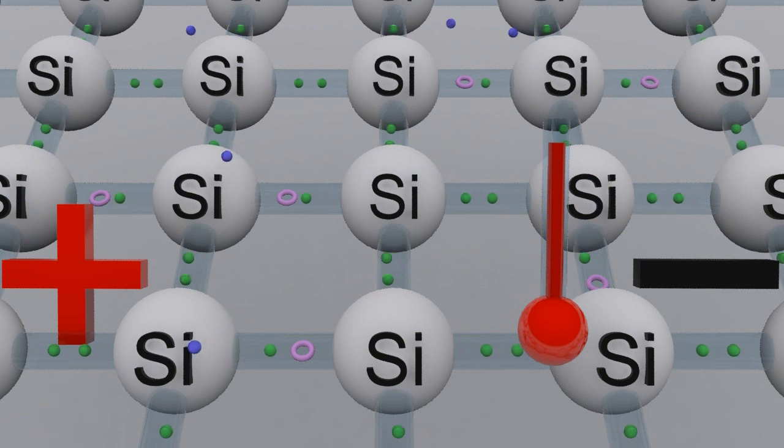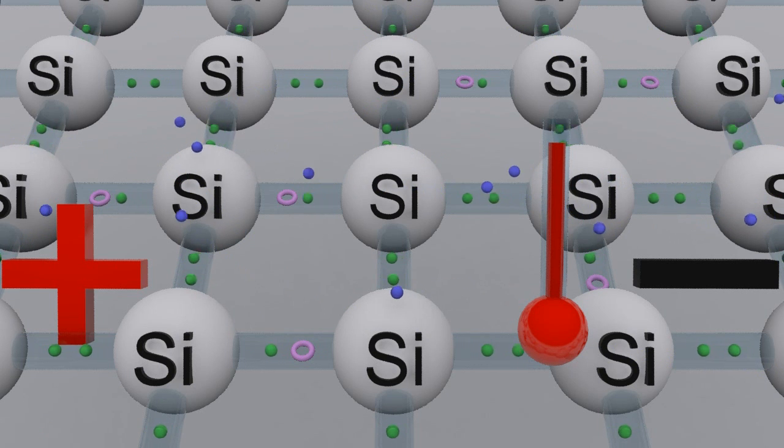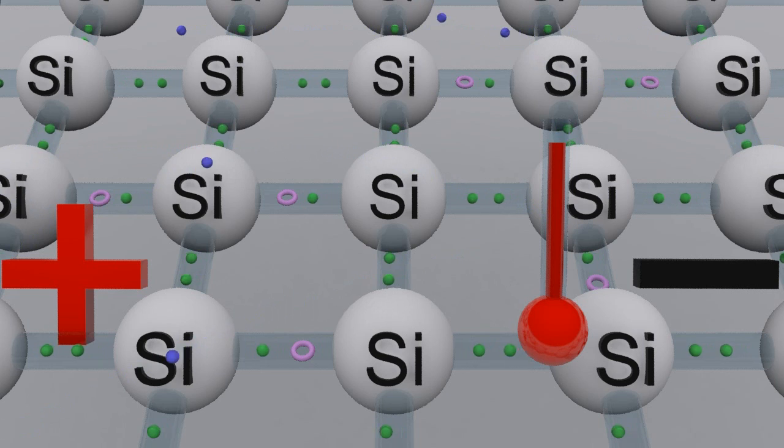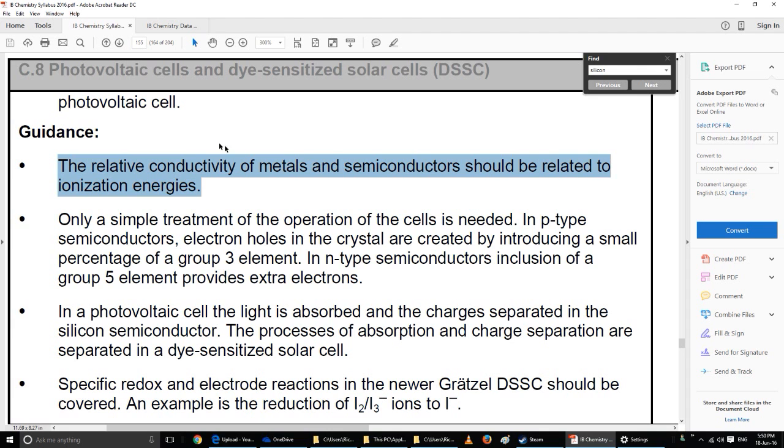So the hotter a semiconductor such as silicon is, the higher its conductivity. Now that's different to metals. As you heat a metal the conductivity goes down. So let's make sure we're sticking with the old IB guidance here.